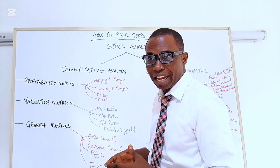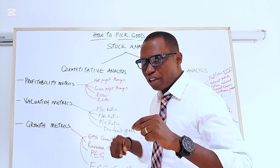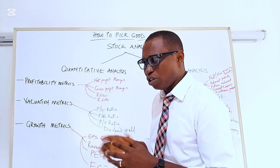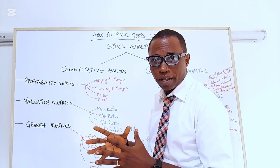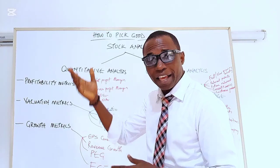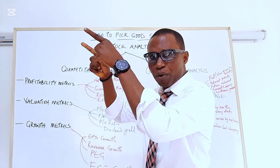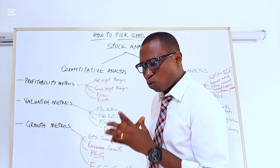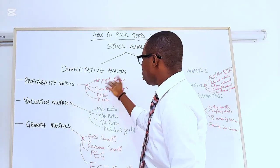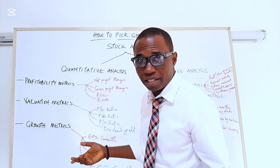Some analysts say anything above 10% is okay. However, depending on the economy — whether you are doing US stocks or Nigerian stocks — your percentage threshold should be different, because you need to look at the terrain and the economy. In some countries taxes are high, in others they are low, so you can't compare profit margins across different terrains. For gross profit margin, some people consider anything above 50% acceptable.